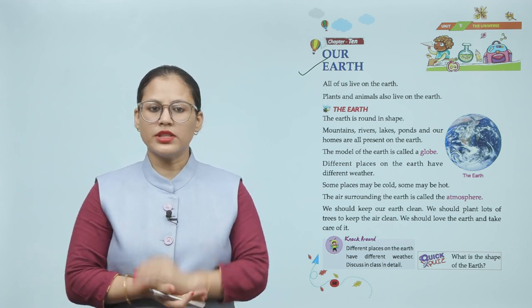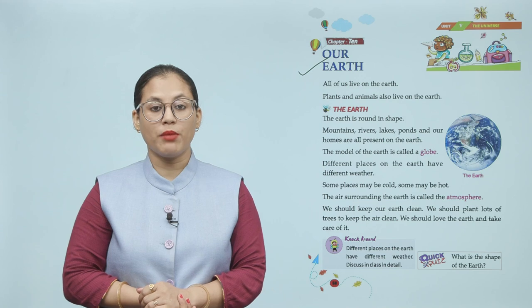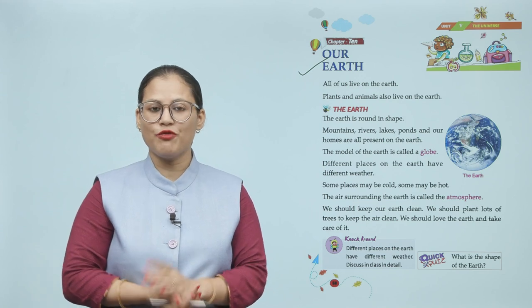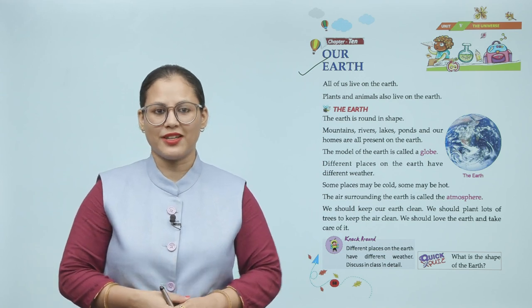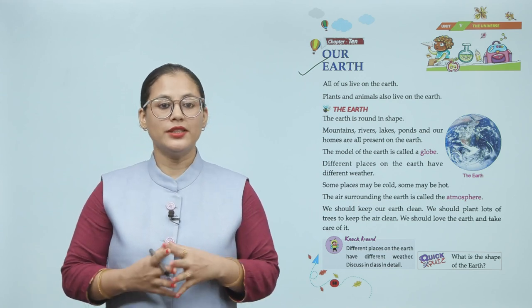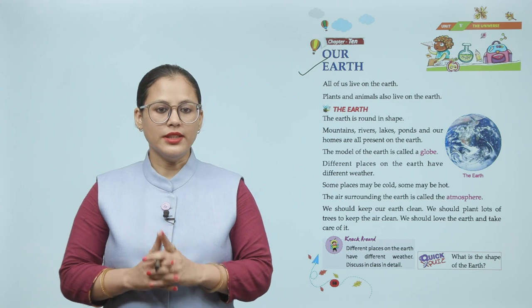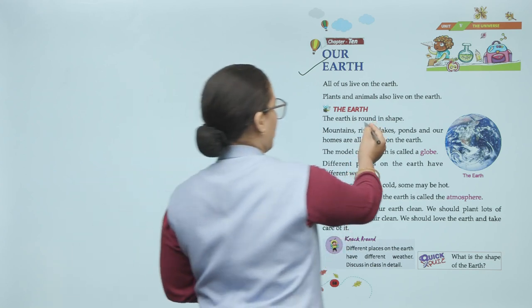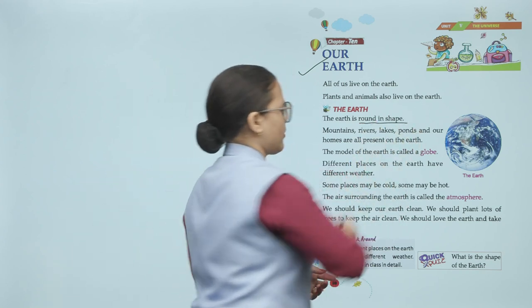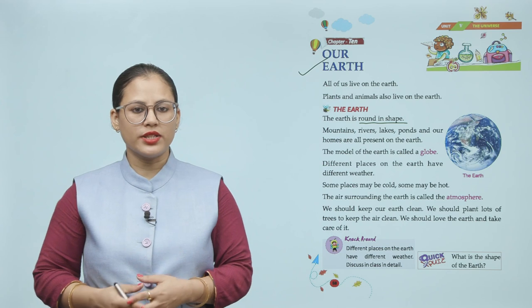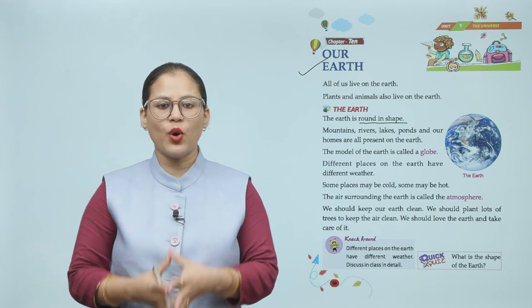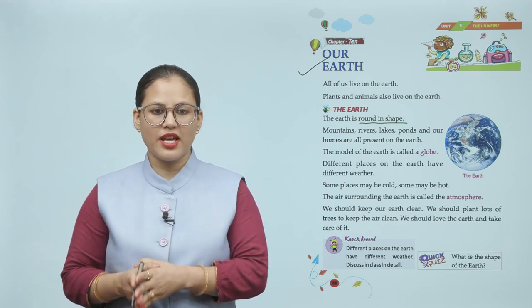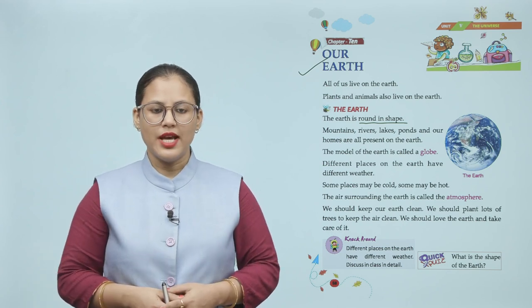Aap dekhi, hum sabhi earth mein rehte hain. Aur humare alava plants and animals jo hain, woh bhi earth mein rehte hain. The earth is round in shape. Mountains, rivers, lakes, ponds — all are present on the earth.